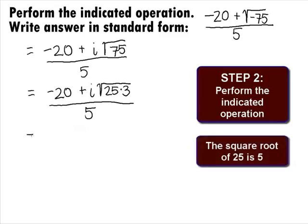We can rewrite the square root of 25 as 5. So, this will give us negative 20 plus 5i square root of 3 all over 5.